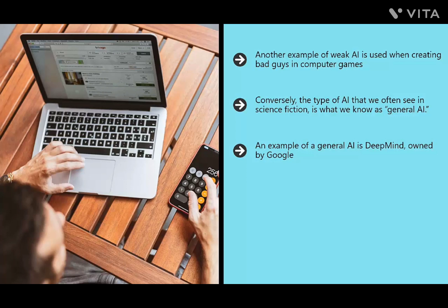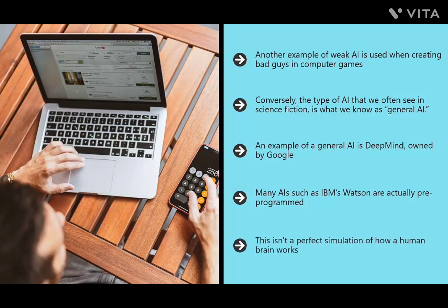An example of general AI is DeepMind, owned by Google — a company that has developed a neural network employing general learning algorithms to learn a huge range of skills. Many AIs such as IBM's Watson are pre-programmed, answering questions the same way every time. DeepMind, however, is able to think and respond via a convolutional neural network where certain behaviors are reinforced and become more prominent. It is the closest thing we currently have to true general intelligence.